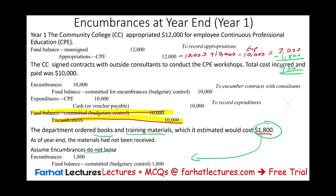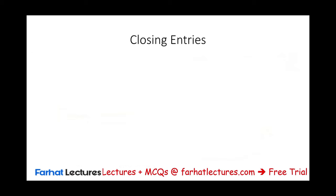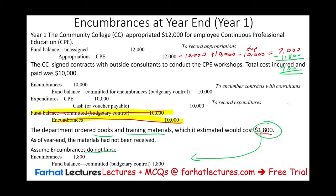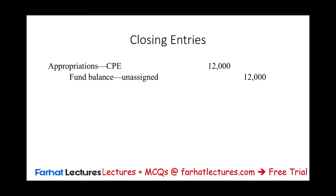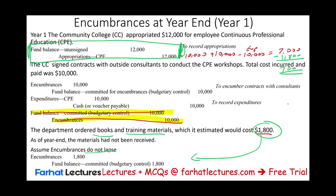Now let's focus on the closing entries for year one. The first thing we have to do is close the original budget. We debit appropriation — CPE — and credit fund balance unassigned $12,000. The budget is closed for the same amount it was opened. Then I close the expenditure: debit fund balance unassigned $10,000 and credit expenditure $10,000. This reduces my equity (fund balance) because of the expenditure, and the expenditure account is closed.